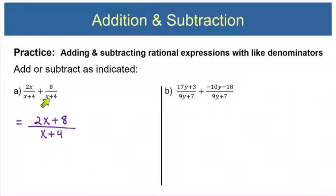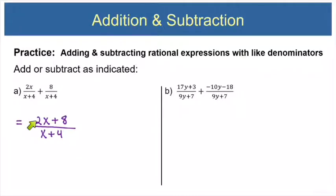When you add fractions together, the denominator stays the same. Now notice that the numerator — the top — has a GCF of 2. We could factor a 2 out of the top, and we need to do that. Because if we factor that 2 out of the top, we get 2 times x plus 4.